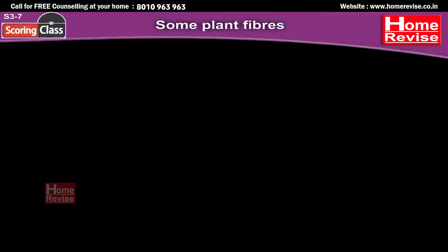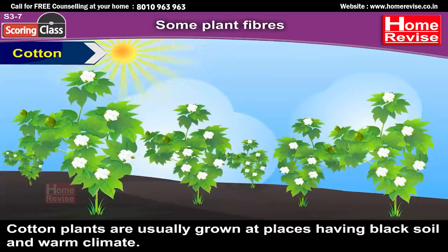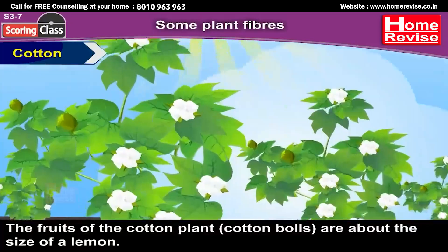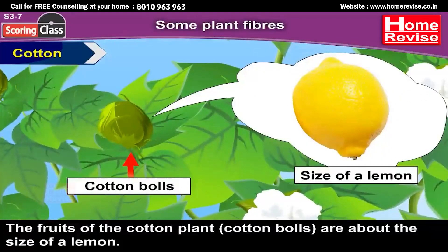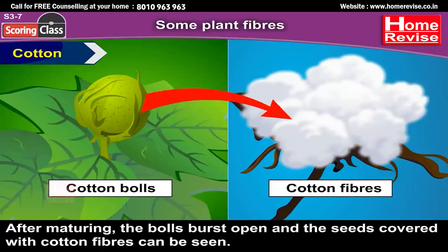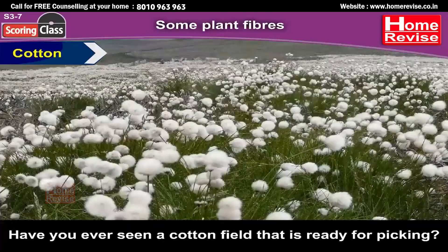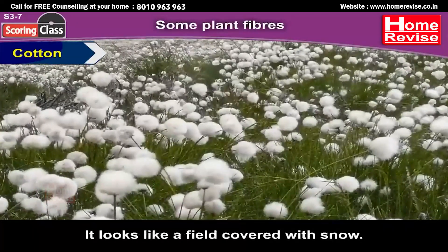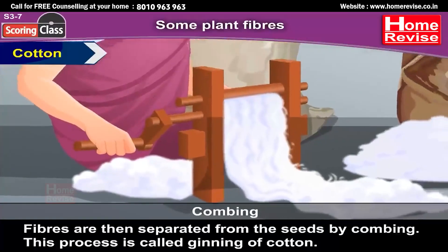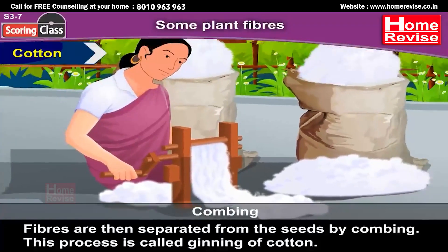Cotton. Cotton plants are usually grown at places having black soil and warm climate. The fruits of the cotton plant, called cotton balls, burst open after maturing, and the seeds covered with cotton fibres can be seen. It looks beautiful, just like a field covered with snow. From these balls, cotton is usually picked by hand. Fibres are then separated from the seeds by combing — this process is called ginning of cotton.